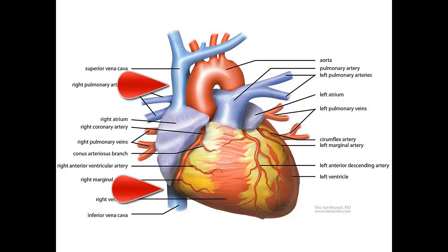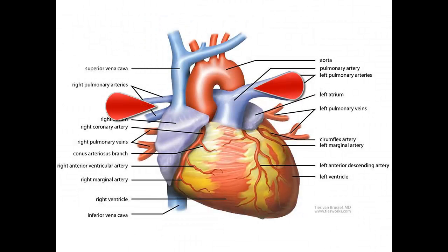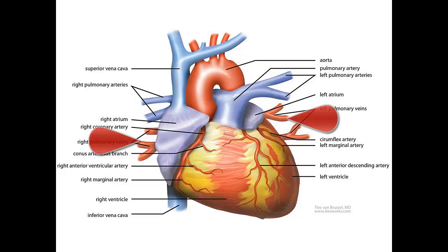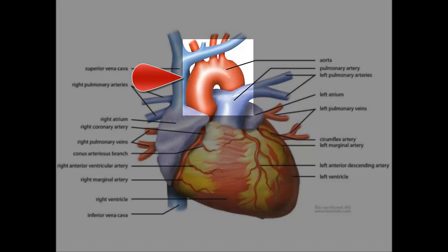These two vessels drain blood back into the right side of the heart: the superior and inferior vena cava. The right side of the heart sends blood to the lungs. Here's the pulmonary trunk and the left and right pulmonary arteries. Note the arteries here are blue, because the body has used up the oxygen stored in the blood. The blood returns to the heart via the pulmonary veins, shown here in red — this blood has been oxygenated in the lungs.